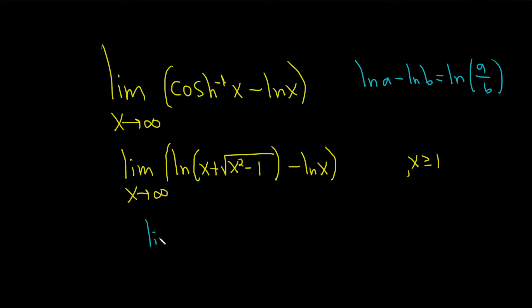So this is the limit as x approaches infinity of the natural logarithm of, so this is our a, this piece here. So this is going to go up top. So x plus the square root of x squared minus 1 over, and then b is x.